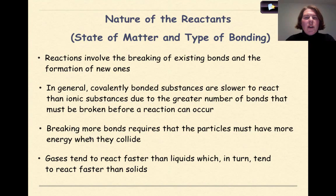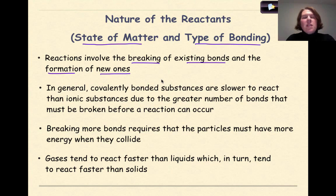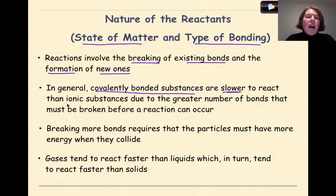Let's start off by talking about the nature of reactants, specifically the state of matter involved — whether it's a solid, liquid, or a gas — and the type of bonding that is involved, specifically looking at ionic and covalent. Remember, reactions involve the breaking of existing bonds and the formation of new ones. In general, covalently bonded substances are slower to react than ionic substances due to the greater number of bonds that must be broken before a reaction can occur, but there are always exceptions to the rules.